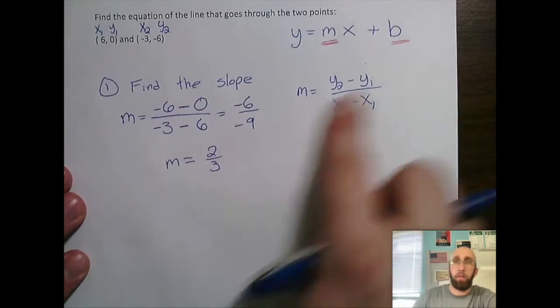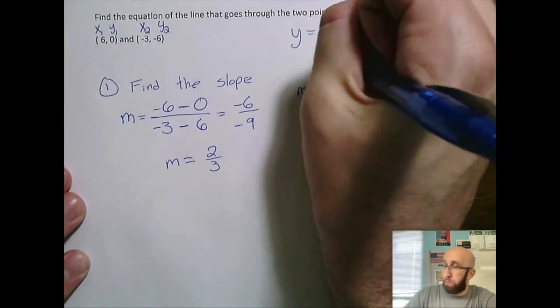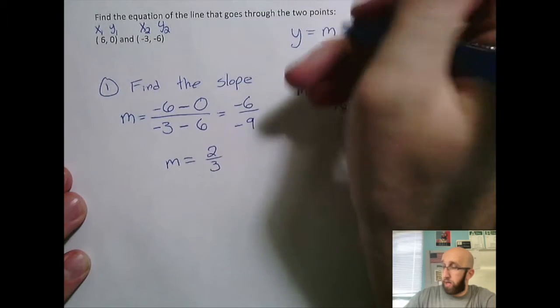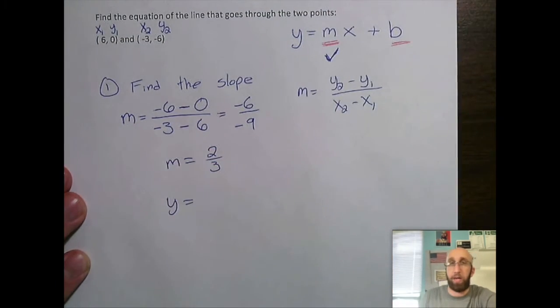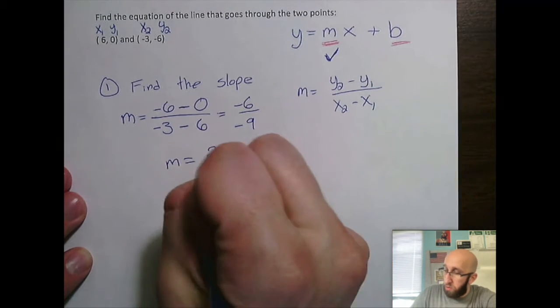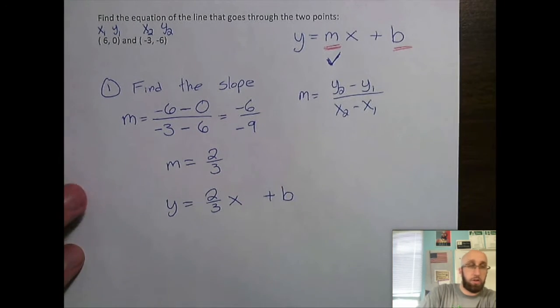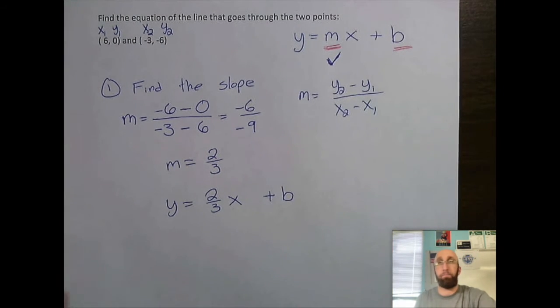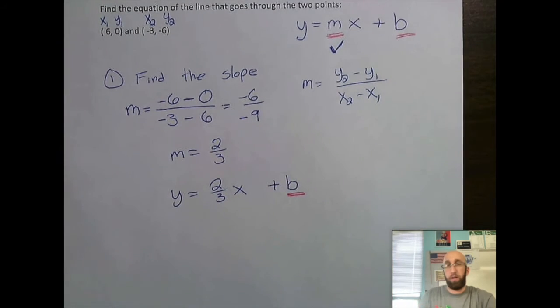So our goal is to come up with y equals mx plus b. At this point in time, I do know my slope. I know my m here. So if I'm starting to put together my equation of my line, I have y equals 2 over 3x plus b. So the only thing left to do is figure out b.